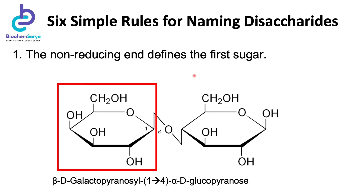To help us further to completely and correctly name a disaccharide, we need to follow six simple rules. Rule number one is that we should remember it is the non-reducing end that will define the first sugar. A reducing sugar is defined as a sugar moiety that has a free anomeric hydroxyl group. Therefore, a non-reducing end is the sugar moiety — in this case galactose — wherein the hydroxyl group attached to the anomeric carbon is no longer free because it has participated in the formation of the glycosidic bond. It is needless to say that sugars naturally exist in the D-enantiomeric form, but it is always indicated for completeness.